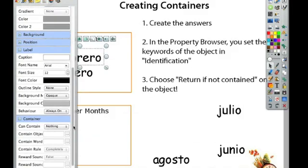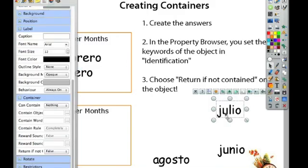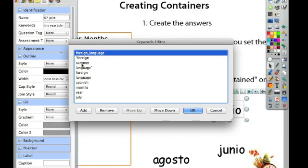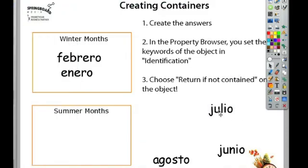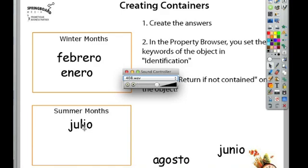To get my words to return, toggle return if not contained back to true. Let's check on Julio here. Let's set this up to return if not contained. Let's check out its keywords. It has summer as one of its keywords. It doesn't have winter as one of its keywords. So now if I bring this over and put it into the winter months box, it will pop right back. It doesn't belong in winter. So if I bring this over and put it into summer months, let me hear the applause.